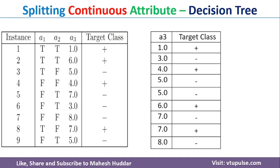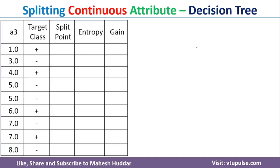First, what we need to do is arrange this particular continuous valued attribute in increasing order. If it is already given in increasing order, there is no need. In this case, it is not given in increasing order, so I have arranged it in increasing order. And we need to write the associated class labels. Once you do that, the next step is to find the split point.